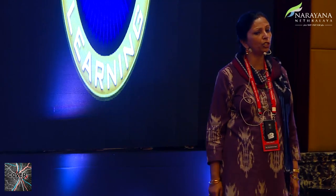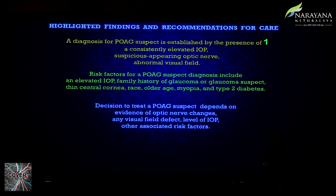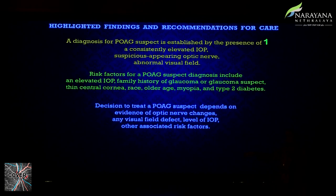Highlighted findings and recommendations: a diagnosis of primary open-angle glaucoma suspect is established by consistently elevated IOP, suspicious optic nerve appearance, or abnormal visual field. Risk factors include elevated IOP, family history of glaucoma, thin central cornea, race, older age, myopia, and type 2 diabetes. Decisions to treat depend on evidence of optic nerve change, visual field defect, IOP level, and other risk factors. In the OHTS study, 90–95% did not develop glaucoma when treated, reducing risk from 9.5% to 4.5%.